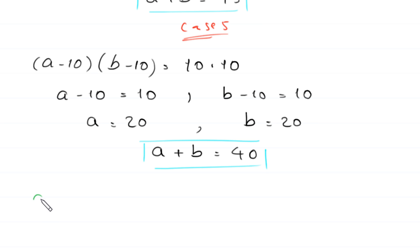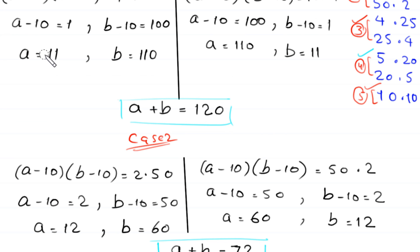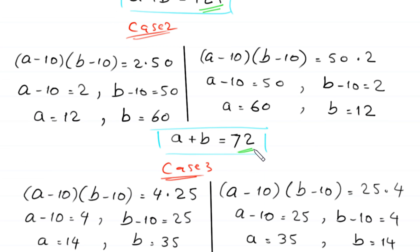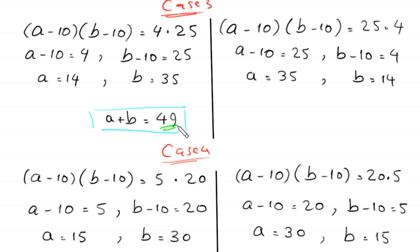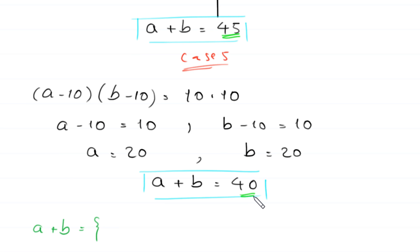The final set of all possible values of a plus b is: 121, 72, 49, 45, and 40.